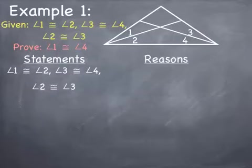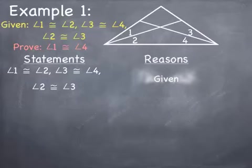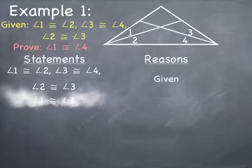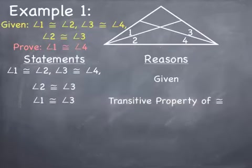I am going to rewrite the givens as my first statement of this proof, and the reason is that you are given this information in the problem. Always look at what you're given — you're going to have to use that information to write your next statement. We're trying to prove angle 1 is congruent to angle 4, so I need angle 1 to appear first. Looking at angle 1 congruent to angle 2, and angle 2 congruent to angle 3, notice angle 1 and angle 3 are both congruent to angle 2.